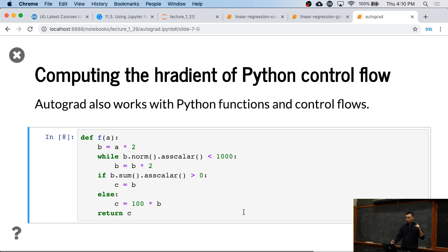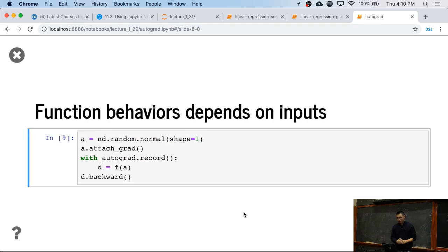So this for loop, the while loop and the if-else conditions, the behavior change given different b. The while loop, how many steps we're going to execute, depends on the size of b. And the if-else conditions, which branch we're going to take, also depends on the input of a. So this function behaves differently given a different function. We build a different computation graph for it. Autograd can also do that as well. Here we generate random a and we attach a gradient, and then run d equals f a, and we can run d backward.